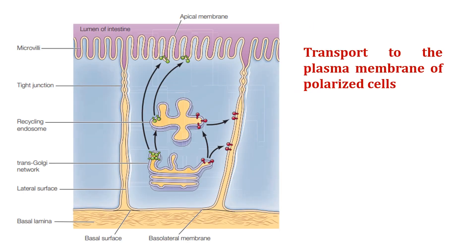Distinct signals target proteins to different plasma membrane domains in polarized cells. In various cell types including epithelial cells — such as intestinal epithelial cells — distinct plasma membrane domains exist: the apical membrane and the basolateral membrane. In epithelial cells organized into tissue, protein transport to the plasma membrane becomes complex due to cell polarization. Each domain contains specific proteins tailored to their function, and selective packaging into transport vesicles from the trans-Golgi network is essential.